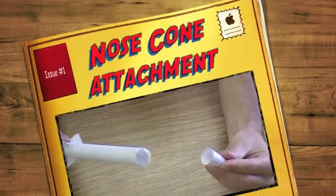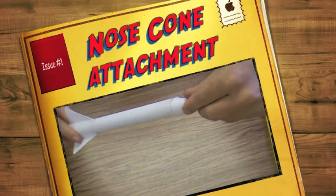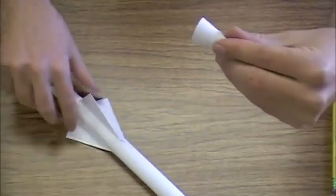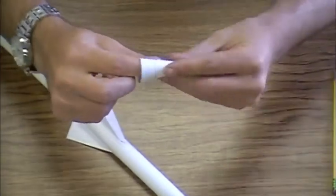Chapter 5: Attaching Our Nose Cone. We now begin the step of attaching our nose cone to the rocket.